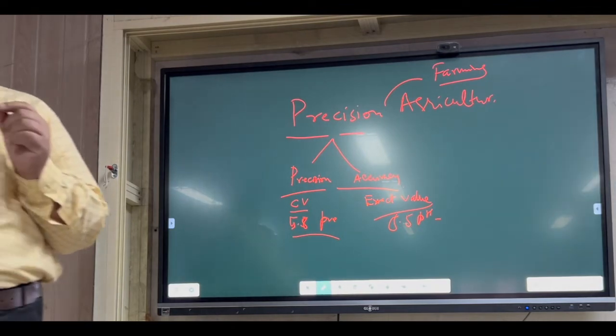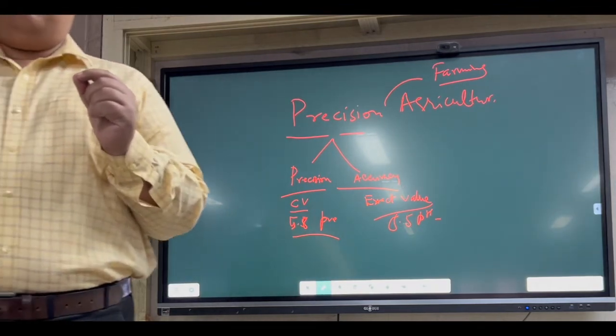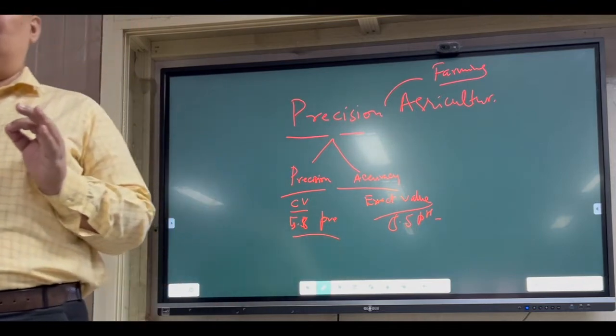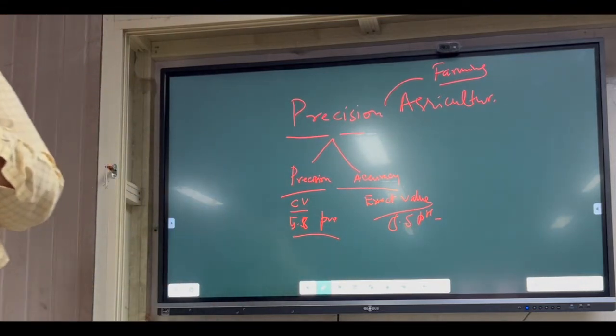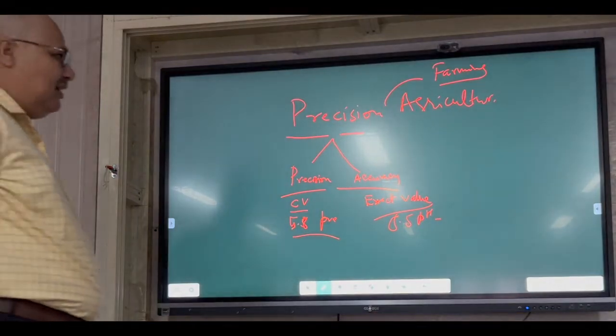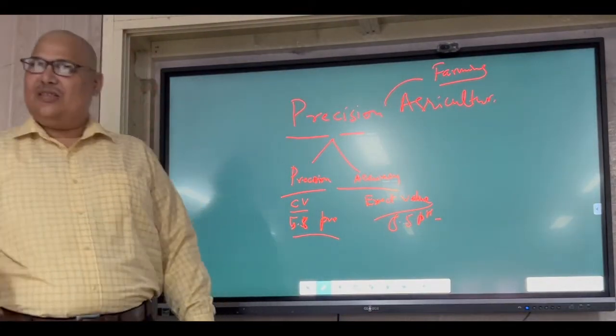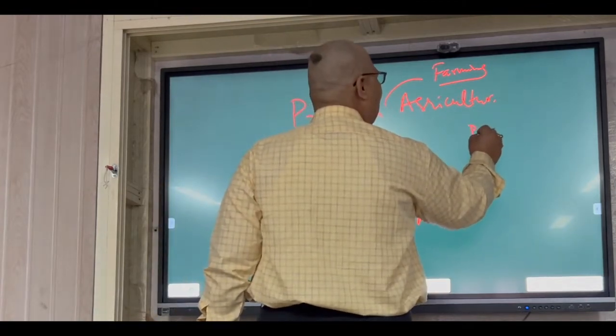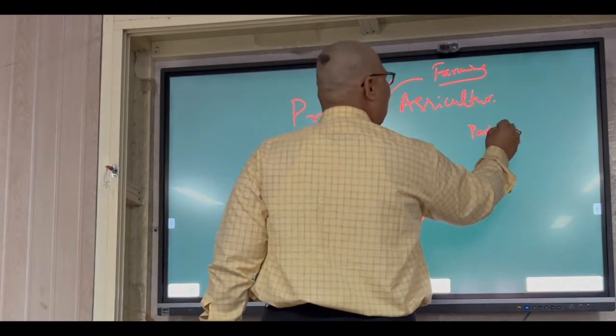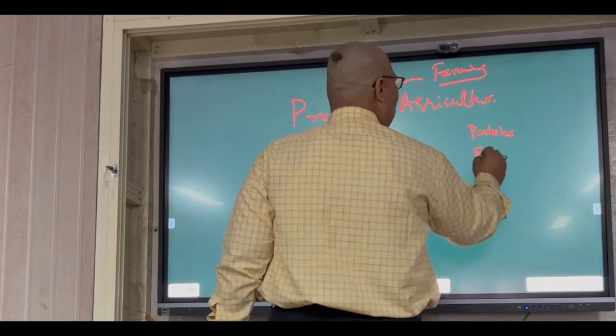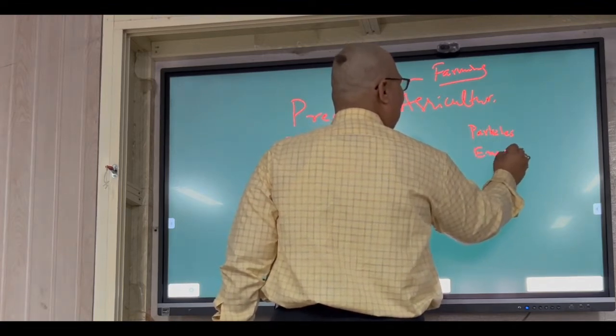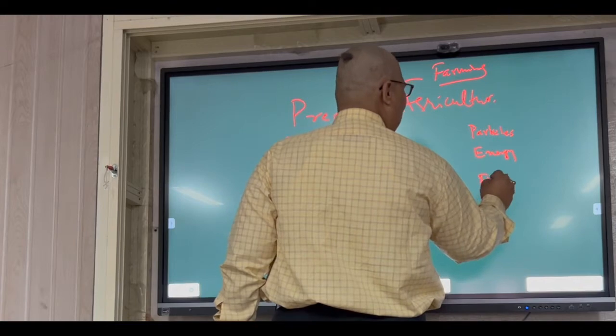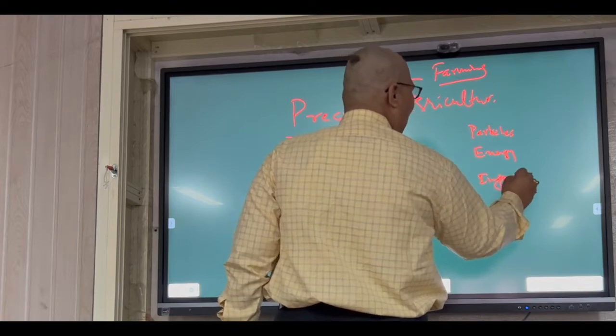First, you understand the process. While we are talking about precision, the universe is governed by three things: particles, analogy, and informancy.